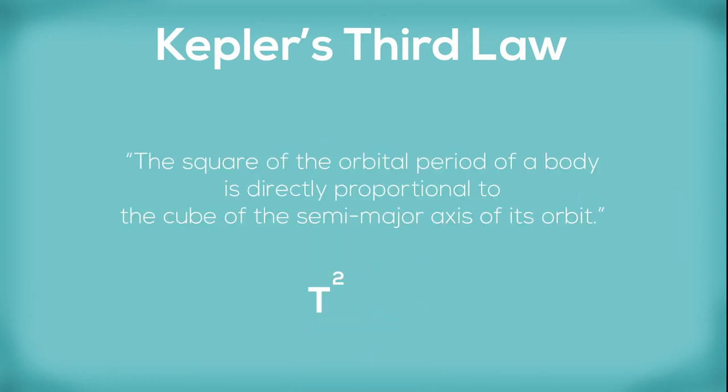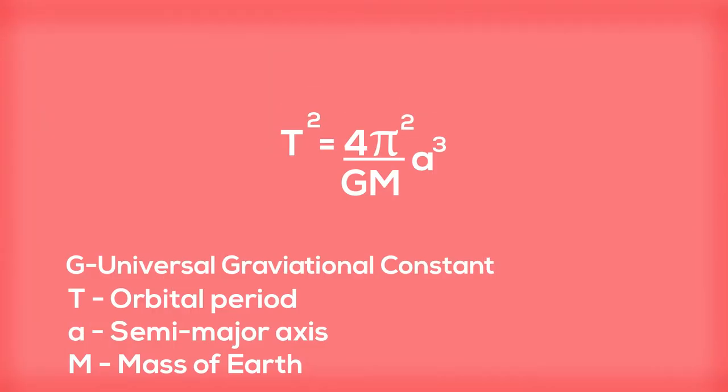Kepler's third law states that the square of the orbital period of a body is directly proportional to the cube of the semi-major axis of its orbit. And this can be represented by the following formula: T squared equals 4π squared over GM times a cubed.